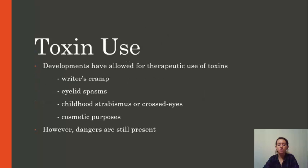Developments in technology have allowed for multiple therapeutic uses of the C. botulinum toxin. These can include muscle spasms involved with writer's cramp, eyelid spasms, childhood stiffness, also called crossed eyes, and cosmetic purposes such as Botox. However, with the use of these highly toxic substances, dangers are still present. In certain cases, muscle paralysis has developed from the therapeutic use of toxins that were meant to help with muscle spasms. So when considering the use of these toxins in therapy, that danger has to be addressed.